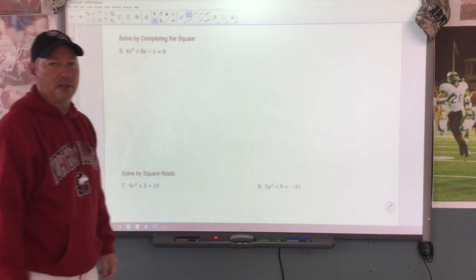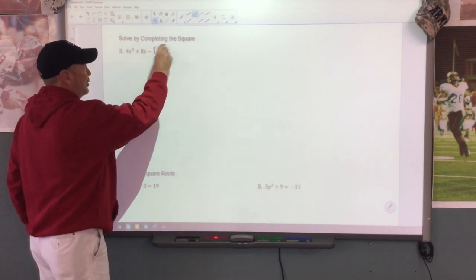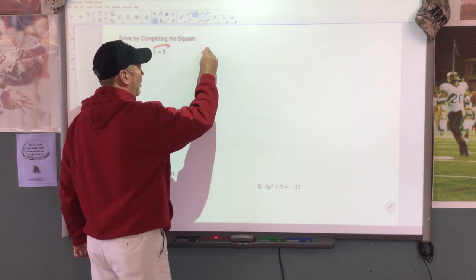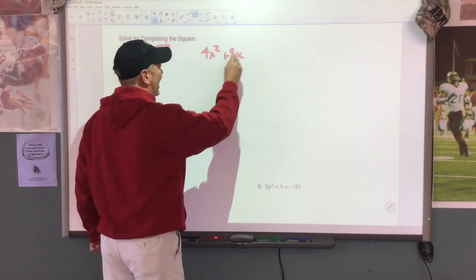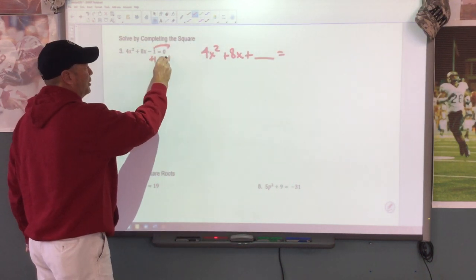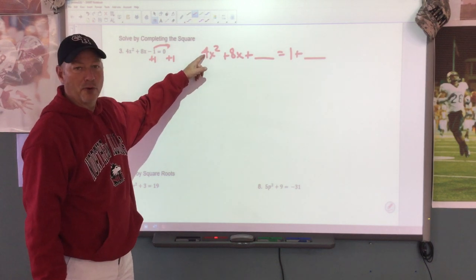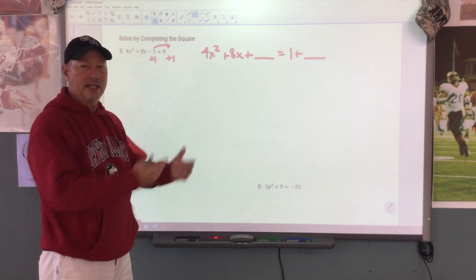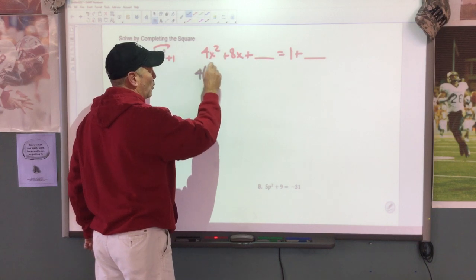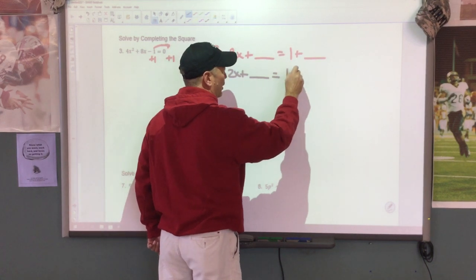They're going to ask us to solve by completing the square. When you complete the square, I have to have a gap here. My first step is to move over so I have a blank to complete the square. So I'm going to say 4x squared plus 8x plus blank equals — when I move that 1 by adding 1 to both sides — that's going to give me 1 plus blank. I cannot leave this 4 next to my x squared. That messes me up, so we need to factor that 4 away. So that's going to give me 4 times x squared plus 2x plus blank equals 1 plus blank.